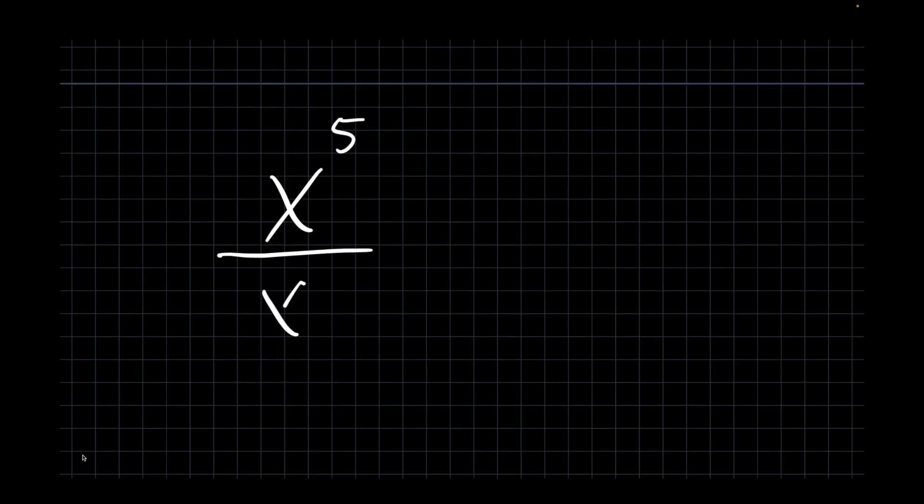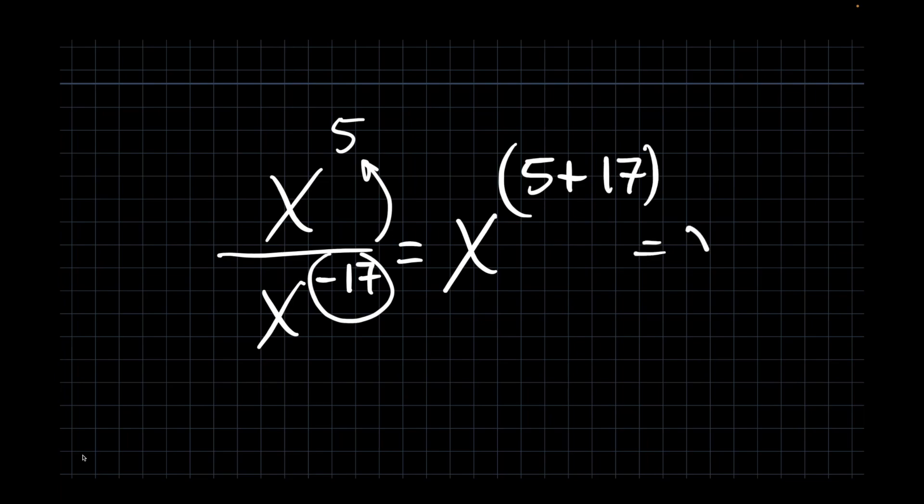x to the 5th over x to the negative 17th, x to the 5th plus, cross the line, change the sign, 17th, which is x to the 22nd.